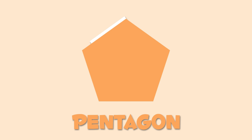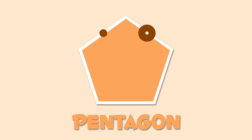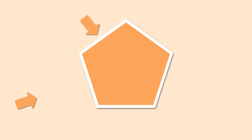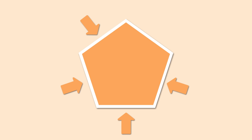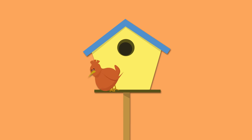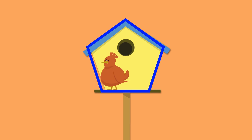This one right here is a pentagon. Pentagons have five sides — one, two, three, four, and five. A pentagon looks like this bird house, or like these football stitches.